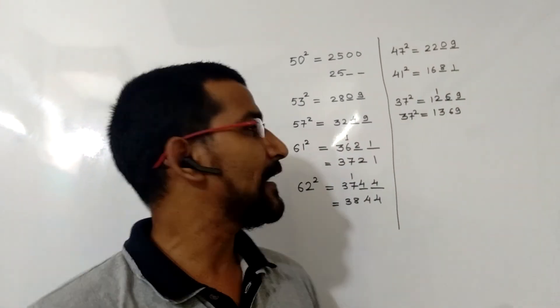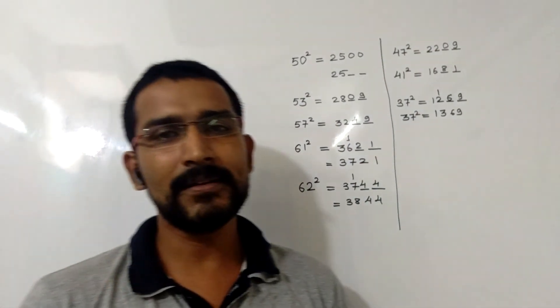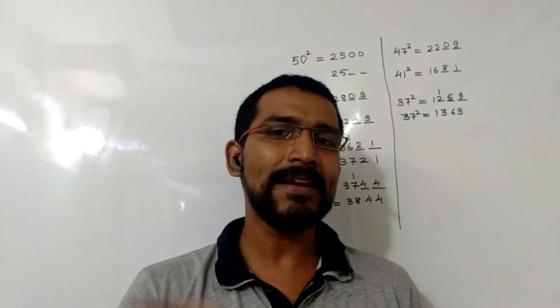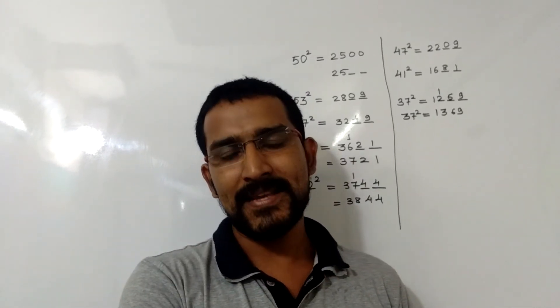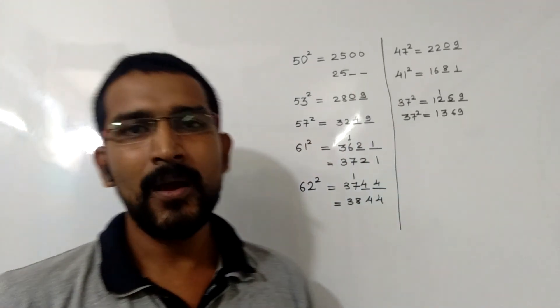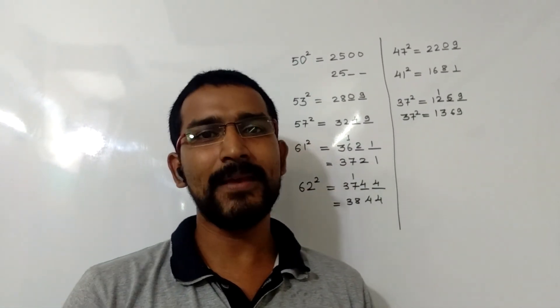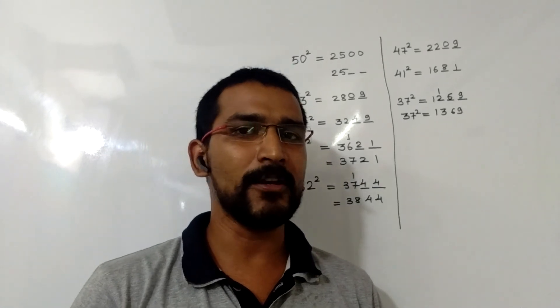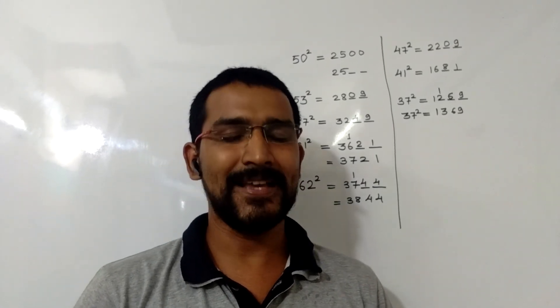This is how we can calculate the square of any number between 30 and 70 by taking 50 as the base value. Hope this will be helpful for your mathematics calculations. Thank you.